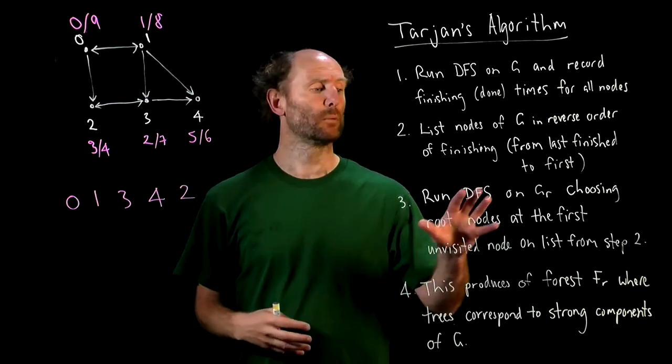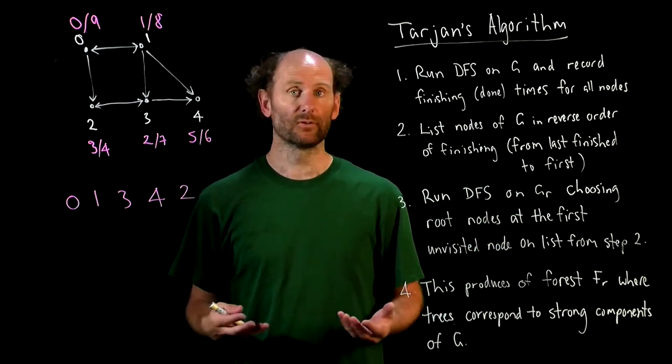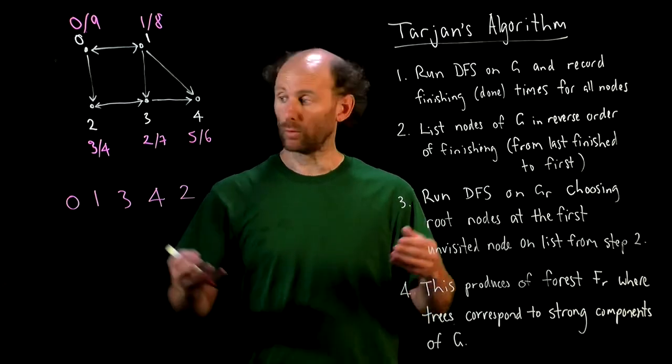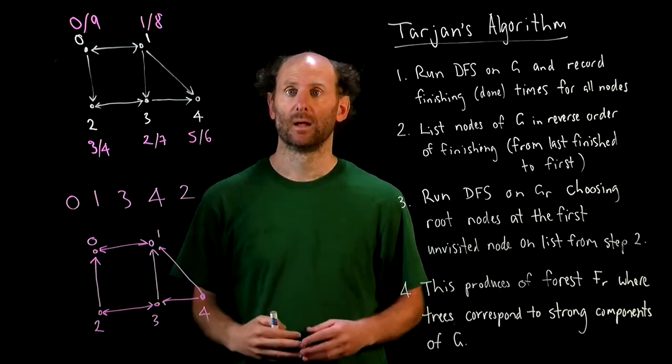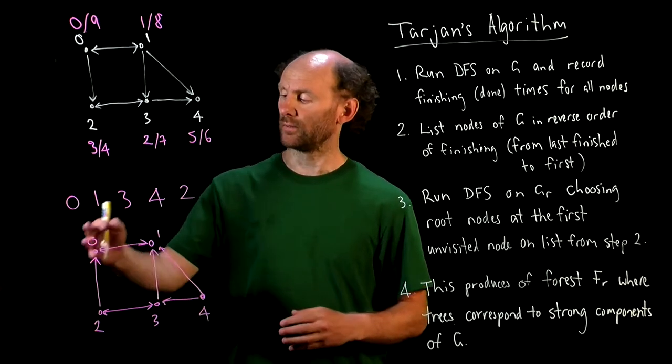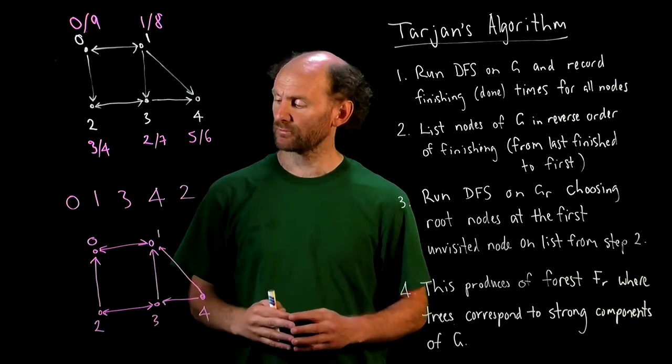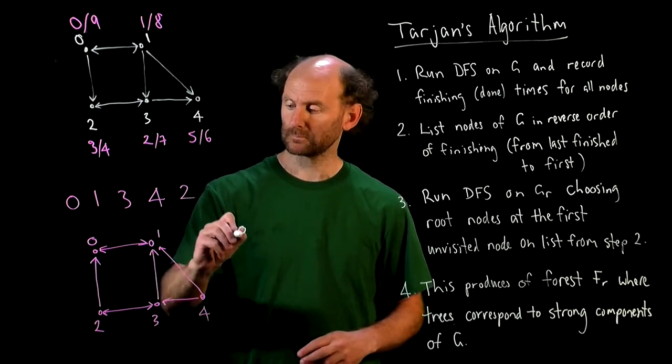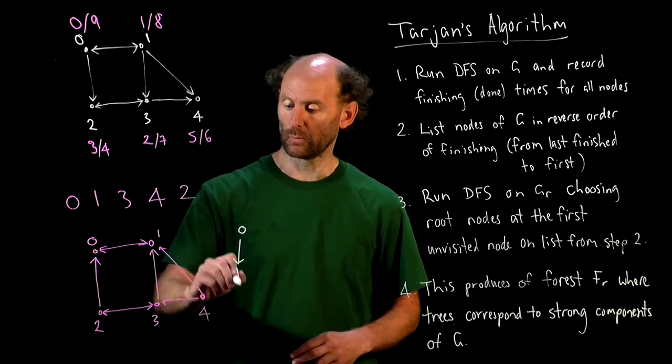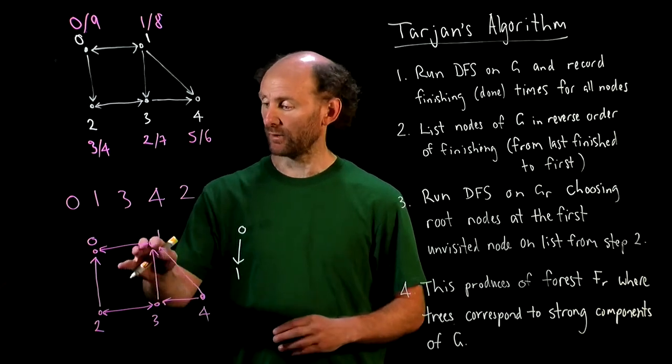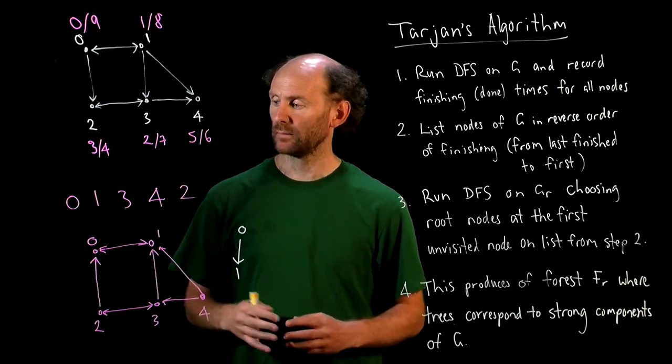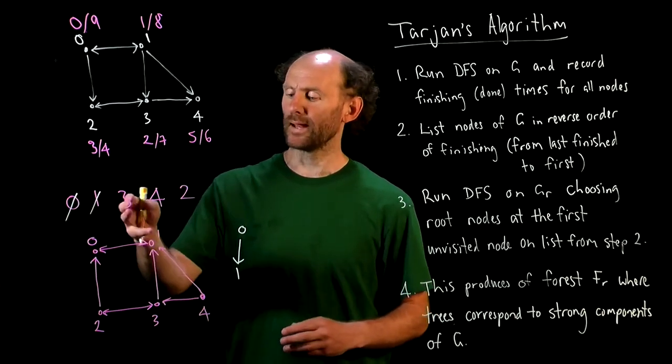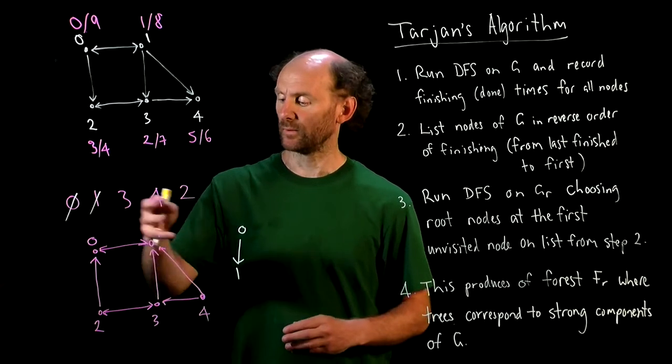Okay, so now we want to run DFS on the reverse of G, and we're going to choose the root nodes according to our list here. So we'll start our depth first search on this reverse graph, we'll start at 0, and then we'll visit 1, and from 1 we can't go anywhere, so we've visited that.